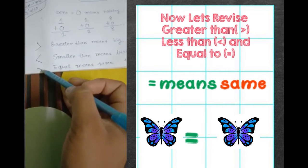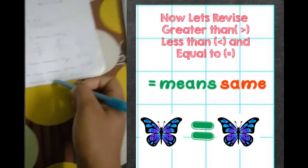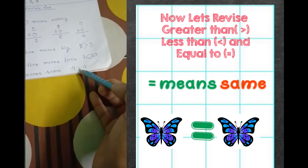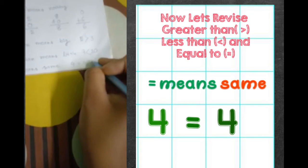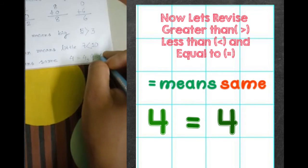And equal is very easy. Equal means same. That is four equals four, nine equals nine. Okay.